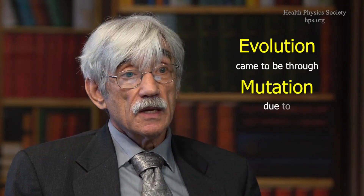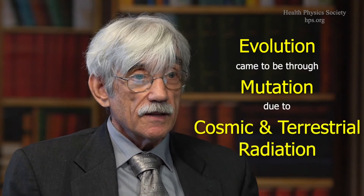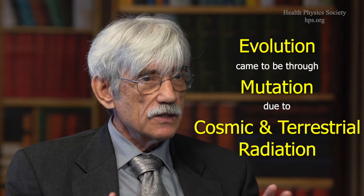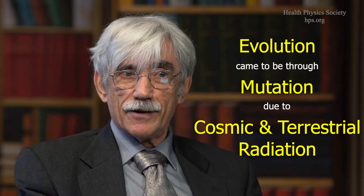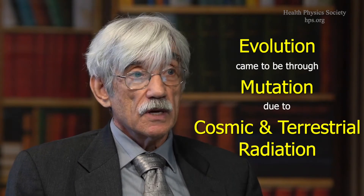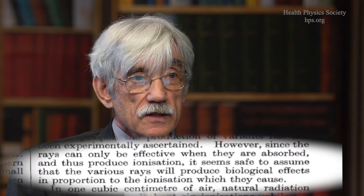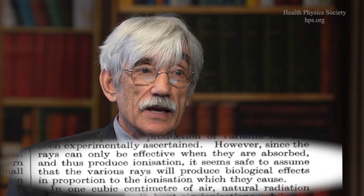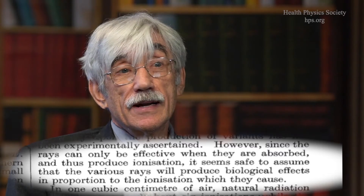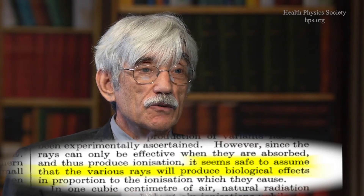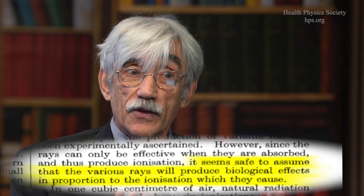They proposed that cosmic radiation and terrestrial radiation were the cause and mechanism of evolution, and it was due to mutation. They laid that right out in the journal Nature in their 1928 paper. And they had to assume that there was a linear dose response for this to apply to all organisms — and that is where the thought initially comes from. So that is a fascinating story.